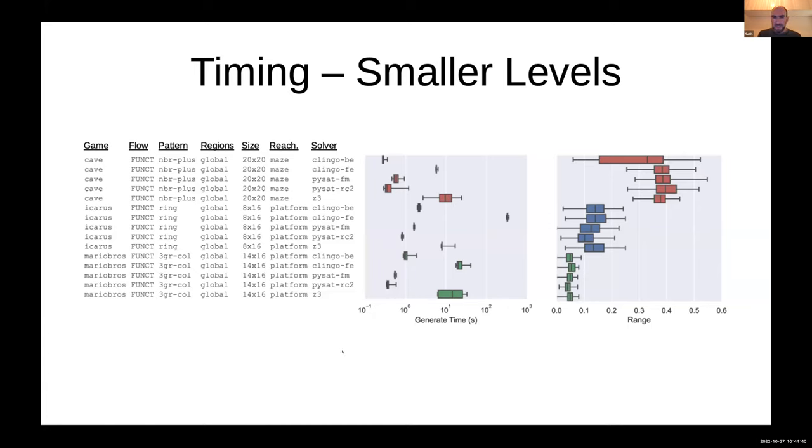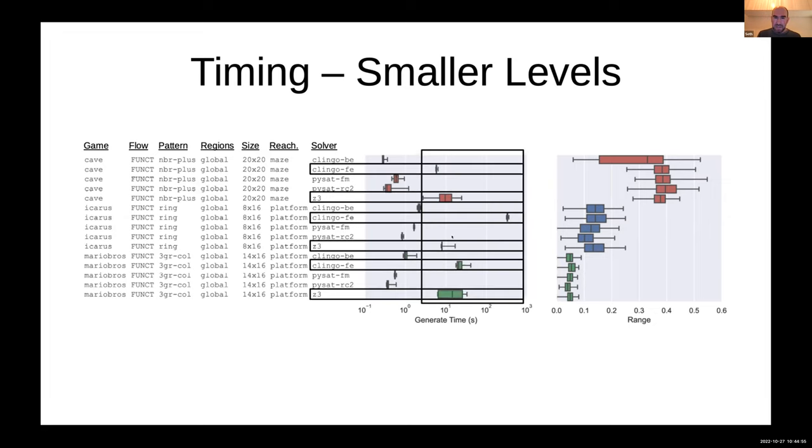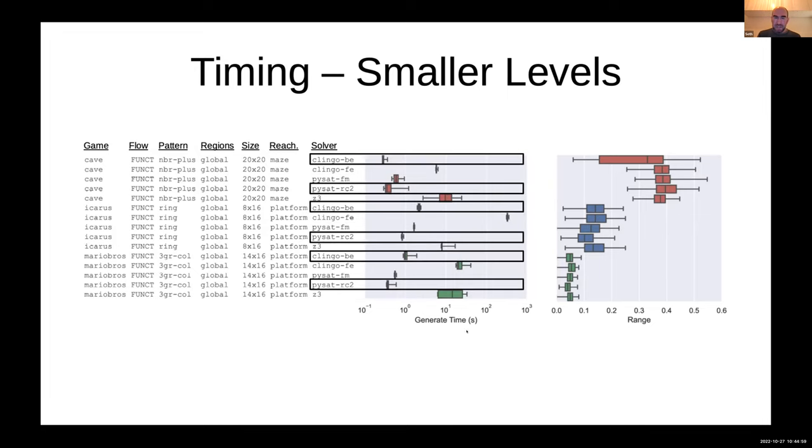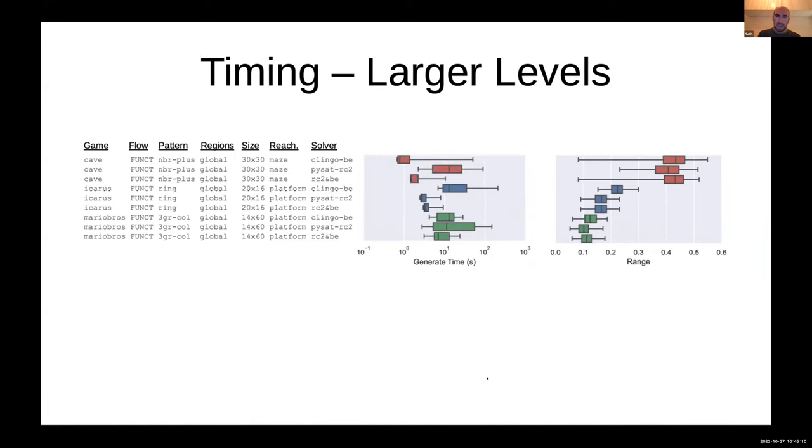One of the interesting things here is that the Clingo front-end solver which uses Clingo's text-based language and Z3 solver, which are arguably the more flexible of the solvers, were actually the slowest. Whereas the fastest ones were Clingo's back-end solver which you can access directly through Python and PySat's RC2 solver. So those are the two that I used moving forward.